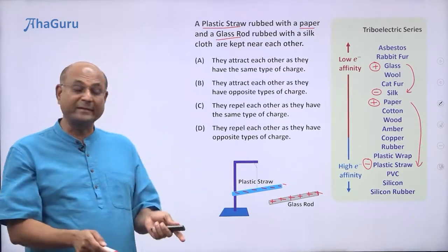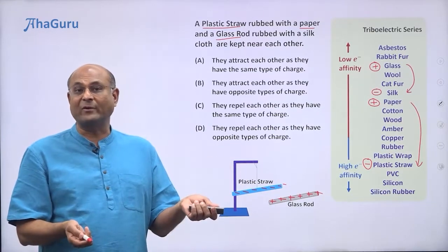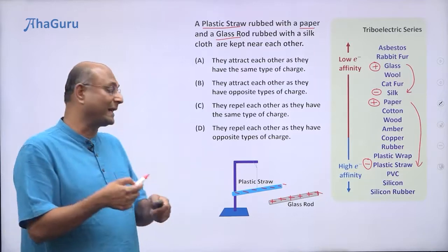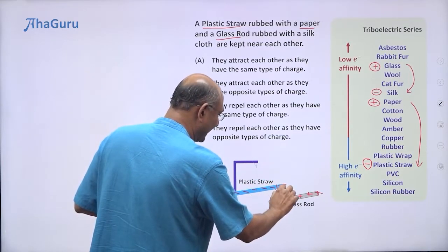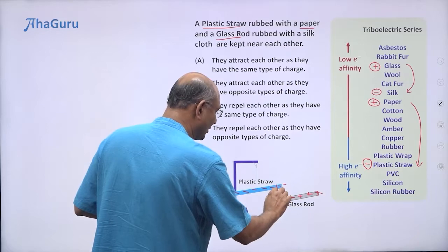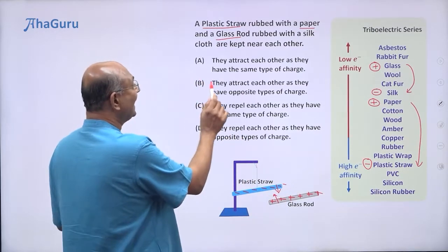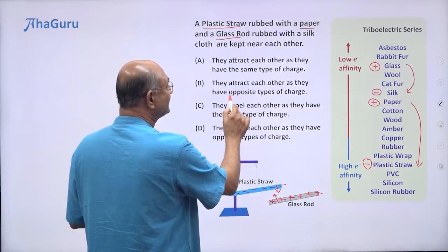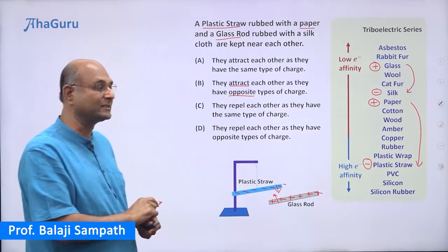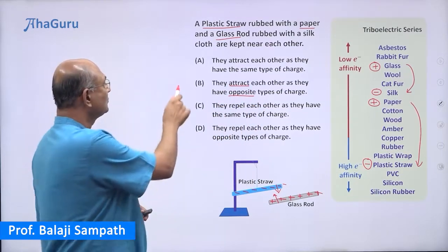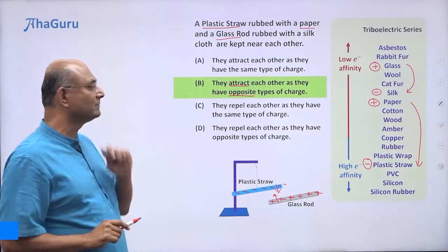Now the question is: what is going to happen? The glass rod has a positive charge and the plastic straw has a negative charge. Because they have opposite charges, they are going to attract each other. The straw gets attracted toward the glass rod and vice versa. They attract as they have opposite types of charges, so the correct answer is option B.